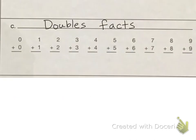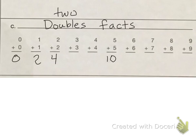What about our doubles? These problems here are double numbers. Double means two, so we're adding two of the same number. What is five plus five? Five plus five is ten. Zero plus zero is zero, one plus one is two, two plus two is four, three plus three is six, four plus four is eight, six plus six is twelve, seven plus seven is fourteen, eight plus eight is sixteen, and nine plus nine is eighteen. And these are my doubles facts.